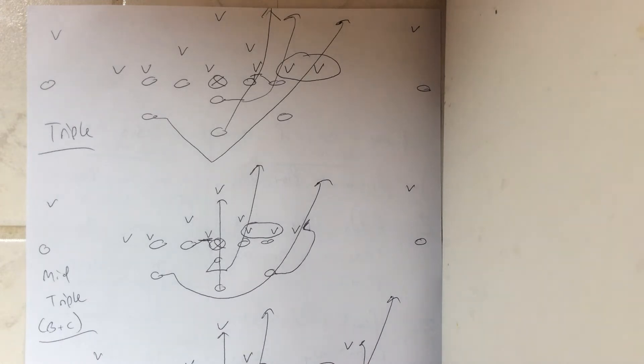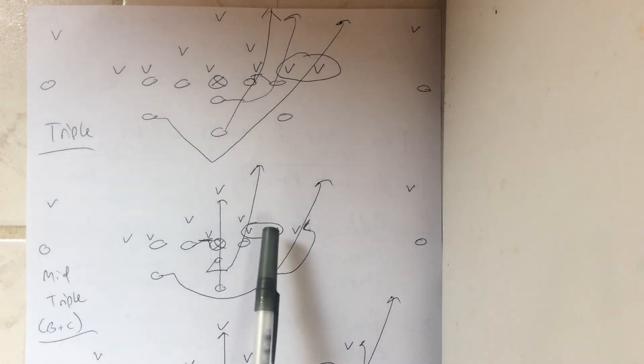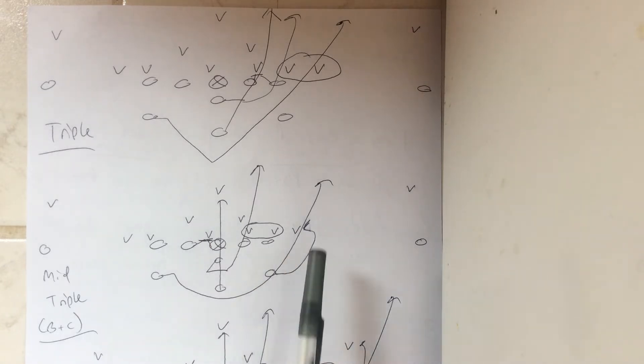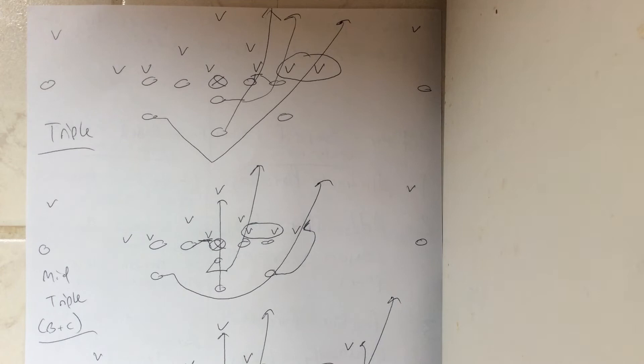Now, in the triple case, you double-team the B-gap defender. What happens here is you've got a B-gap defender, a C-gap defender, and a D-gap defender. If you want to read the B and C-gap defender, that means you have to block the D-gap defender. This is what's called midline triple option.